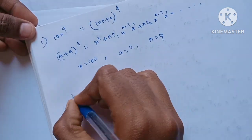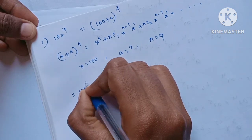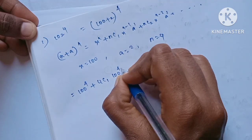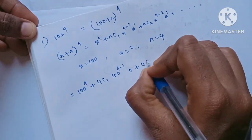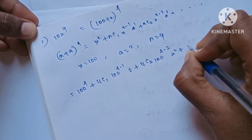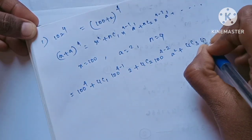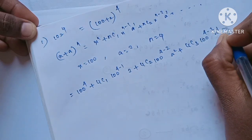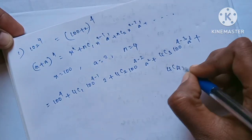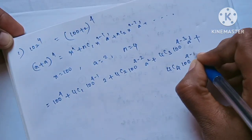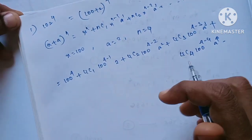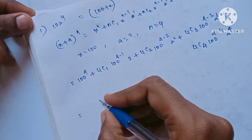Now we can substitute into the formula. The binomial expansion is: x plus a whole power n equals x power n plus nC1 x power n-1 times a plus nC2 x power n-2 times a squared, and so on. Now 100 power 4 is going to be computed.